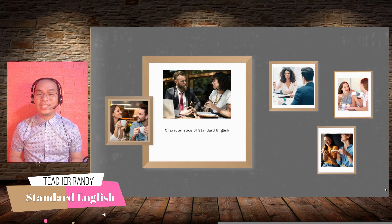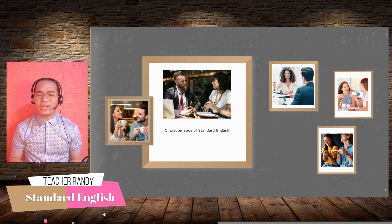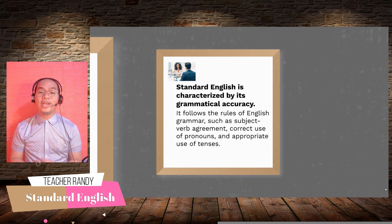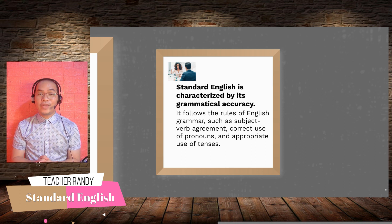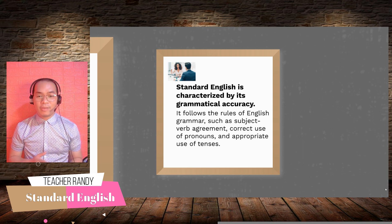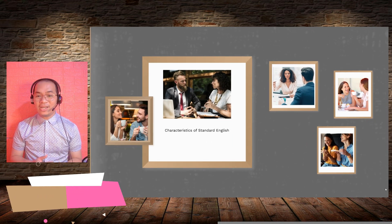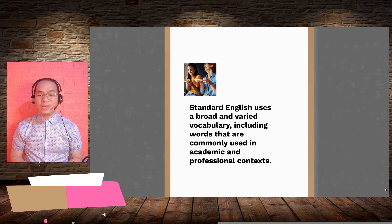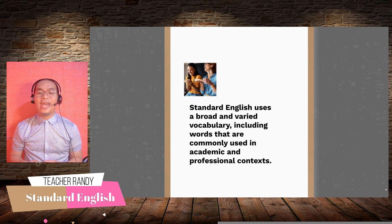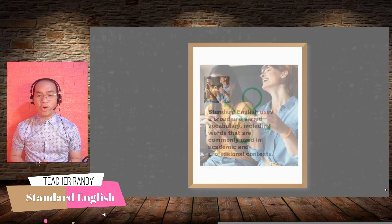Now that we know what Standard English is, let's look at some of its key characteristics. First, Standard English is characterized by its grammatical accuracy, and it follows the rules of English grammar, such as subject-verb agreement, correct use of pronouns, and appropriate use of tenses. Second, Standard English uses a broad and varied vocabulary, including words that are commonly used in academic and professional contexts.